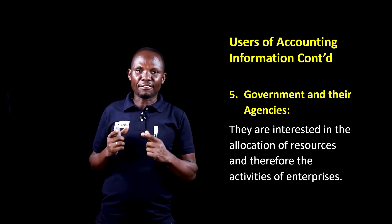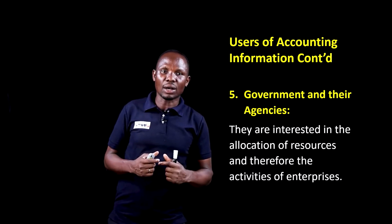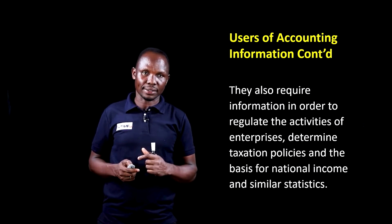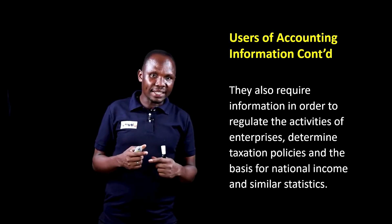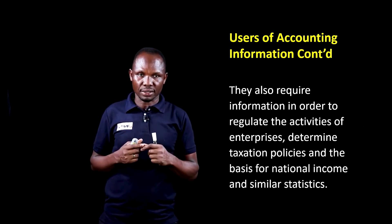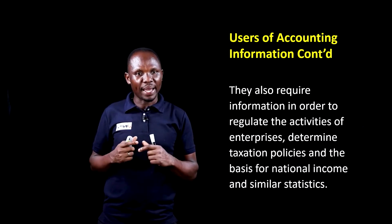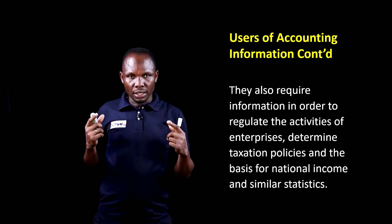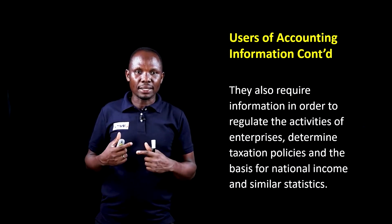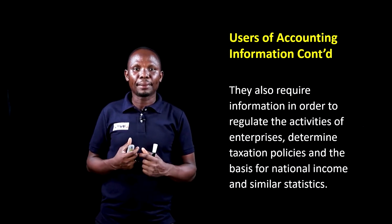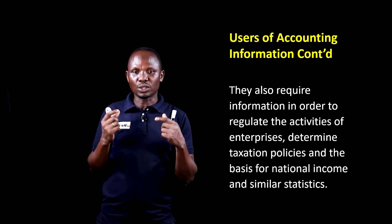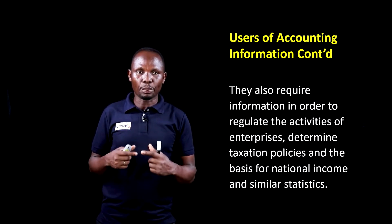Governments and their agencies are also interested in the allocation of resources and therefore the activities of enterprises. They need information in order to regulate the activities of enterprises, determine taxation policies, and provide the basis for national income and similar statistics. Corporate bodies such as companies are required to pay income tax to the government based on their profit, so the government and their agencies need accounting information to determine the amount of tax that companies will pay.